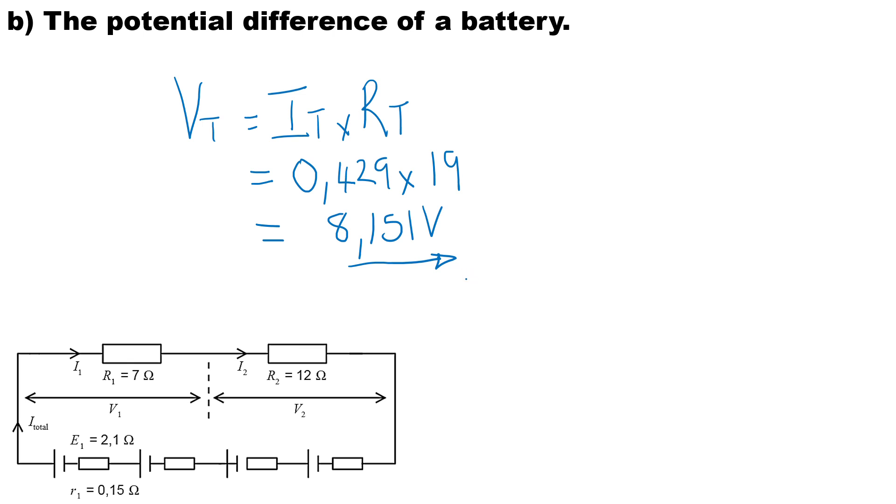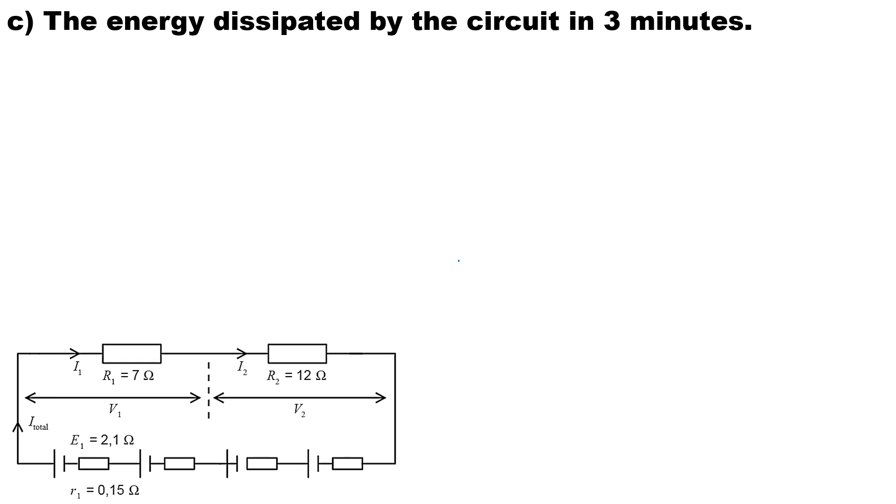Next question: calculate the energy dissipated by the circuit in three minutes. For energy dissipated, the symbol is Q and the formula is I²Rt. Joule's law states that the heat generated in the circuit is directly proportional to the square of the current, the resistance, and the time the current flows.